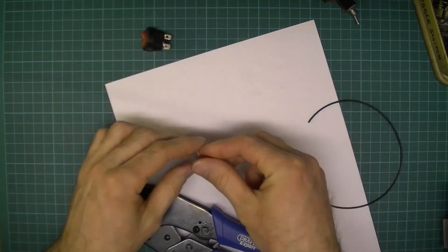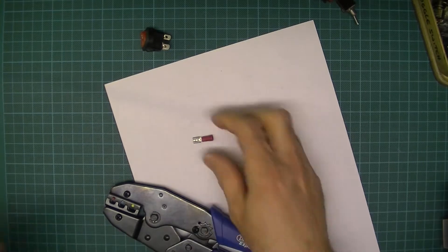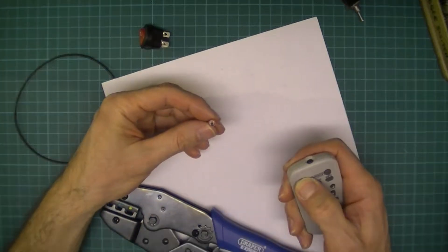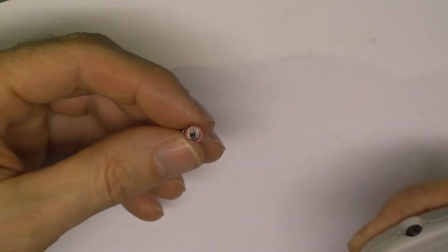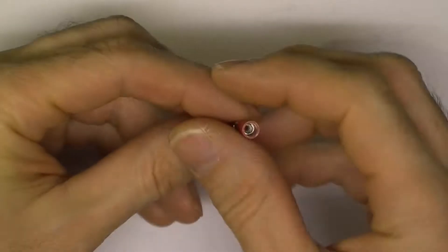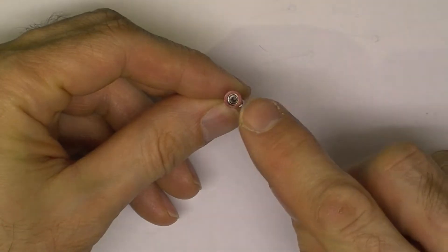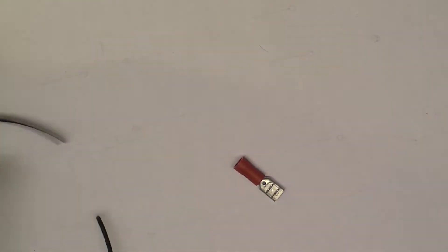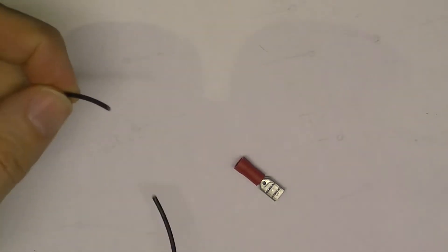Now to do these crimp terminals, I'll see if I can zoom in a little bit. These crimp terminals have a small hole in there, so the hole size should be just a little bit bigger than the wire.